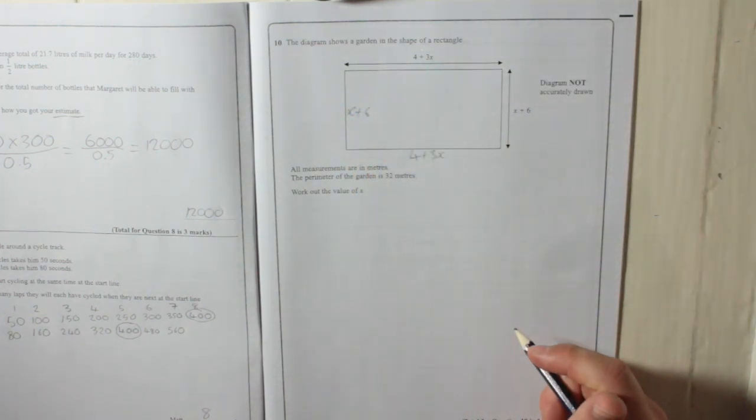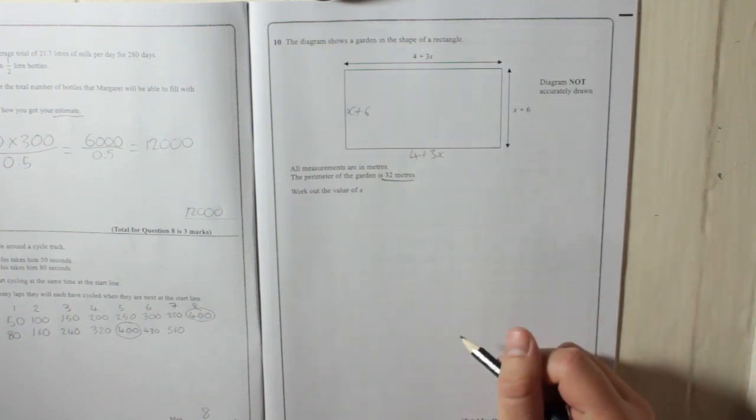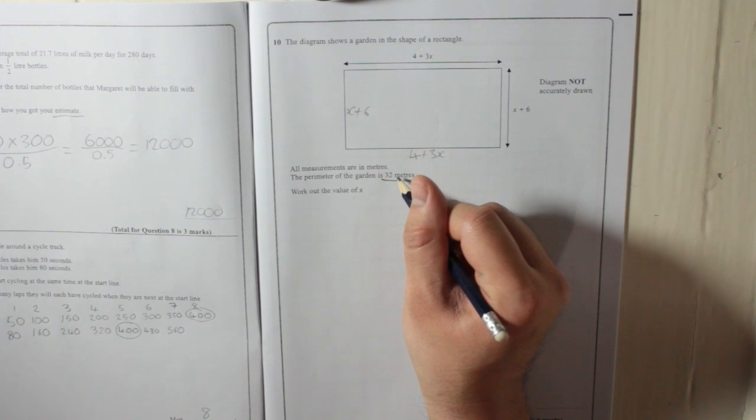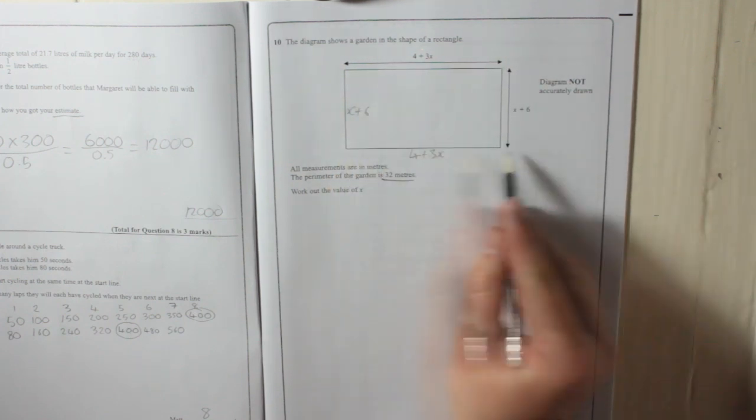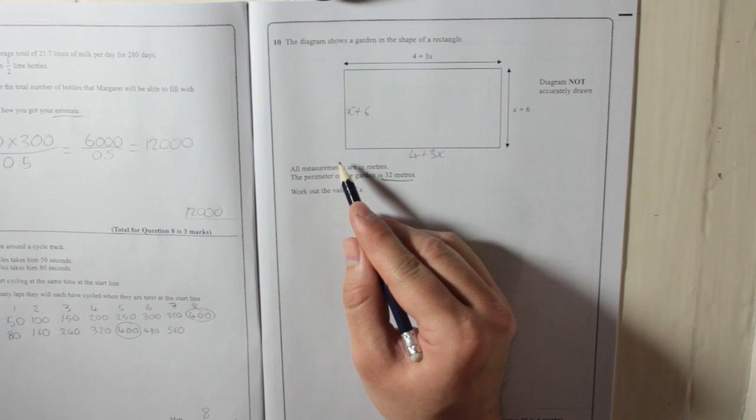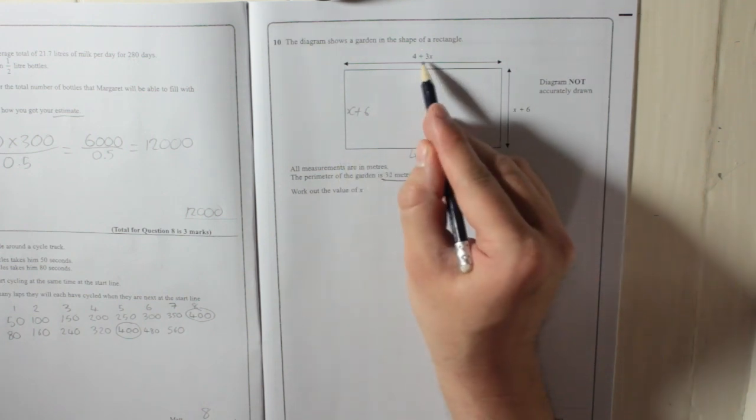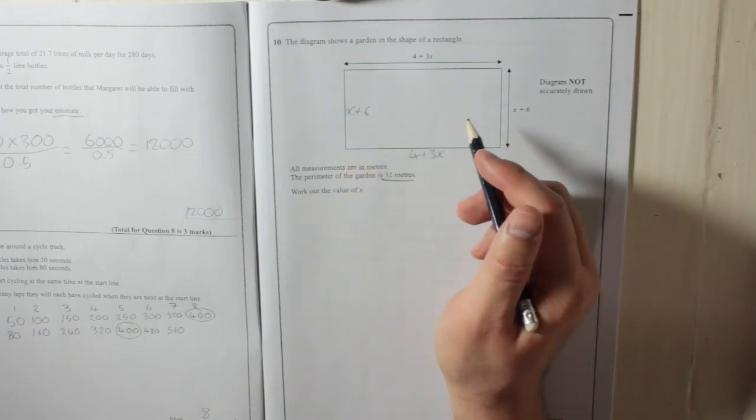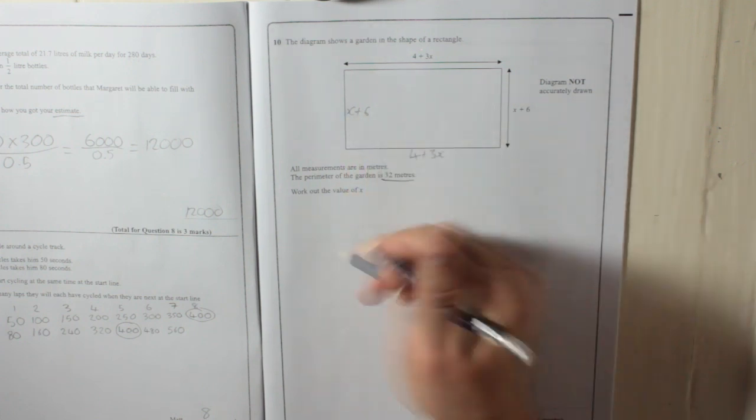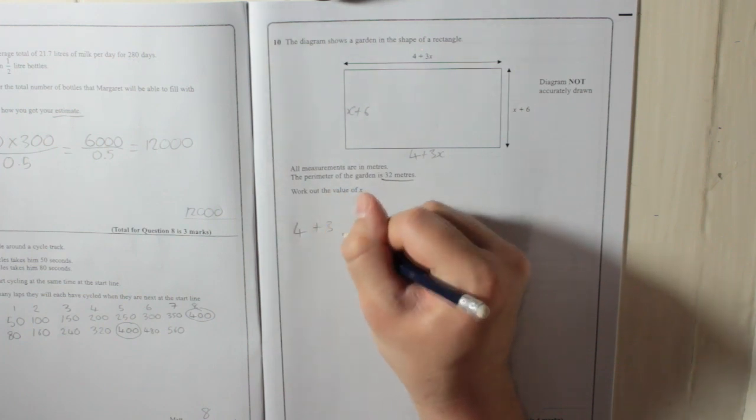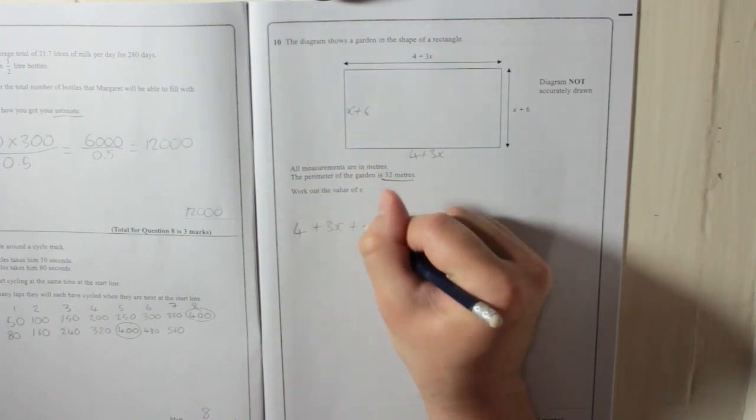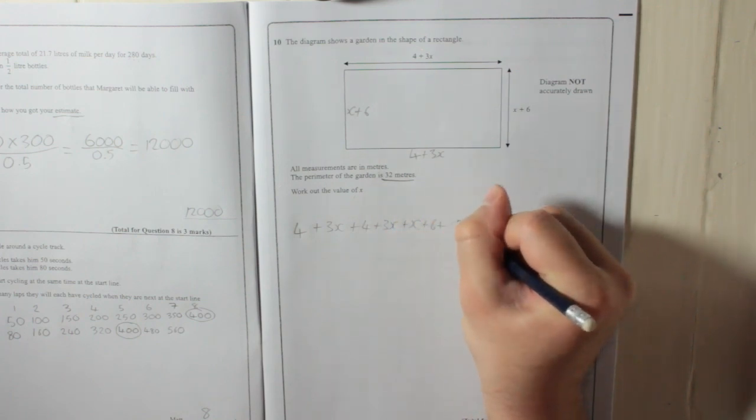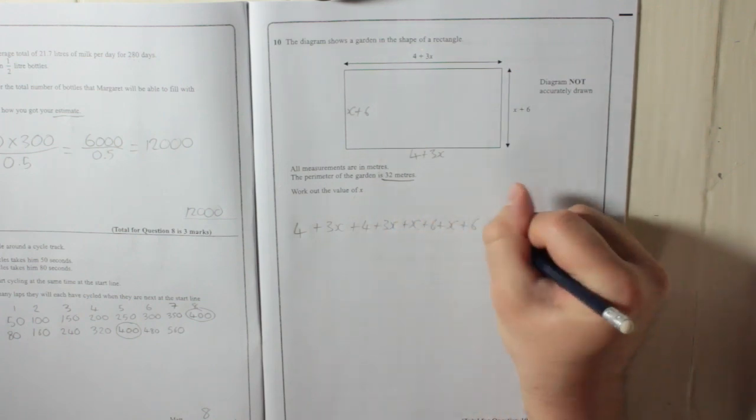In total, we know the perimeter is 32 meters, but we need to find out what x is. What is the same as 32 meters? Well, the perimeter is 32, which means that plus that plus that plus that is 32. So, 4 plus 3x plus 4 plus 3x plus x plus 6 plus x plus 6 is also 32 meters. We'll write that in. 4 plus 3x plus 4 plus 3x plus x plus 6 plus x plus 6, and that is equal to 32.